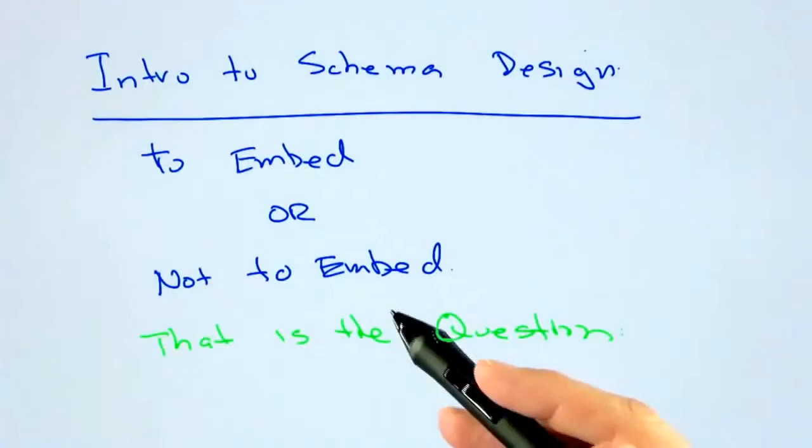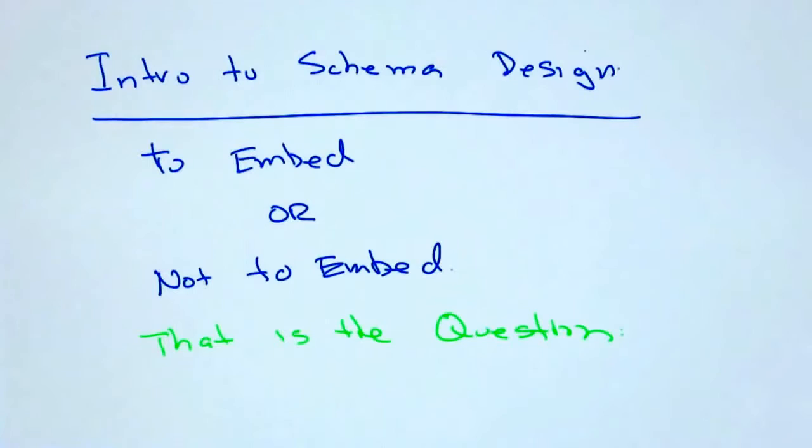With relational databases, it's pretty straightforward to design the schema. You typically go for third normal form and then maybe combine a few things. But with MongoDB and document-oriented designs, how do you know whether to embed or not?